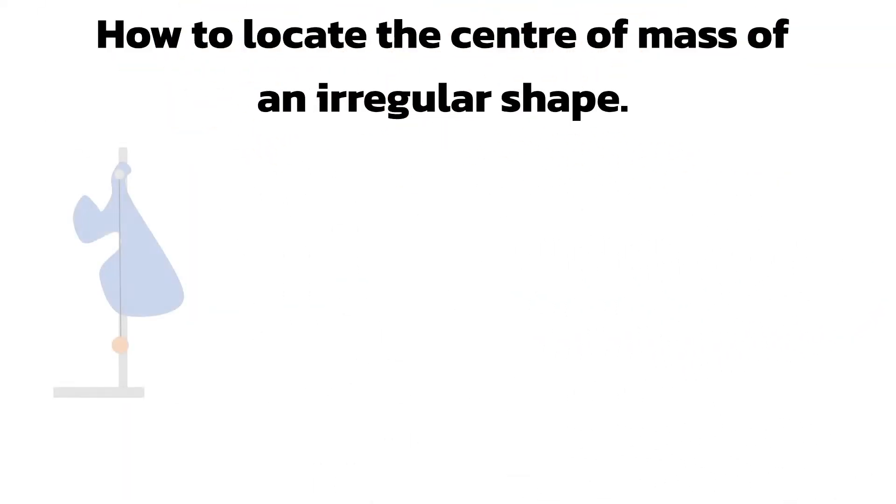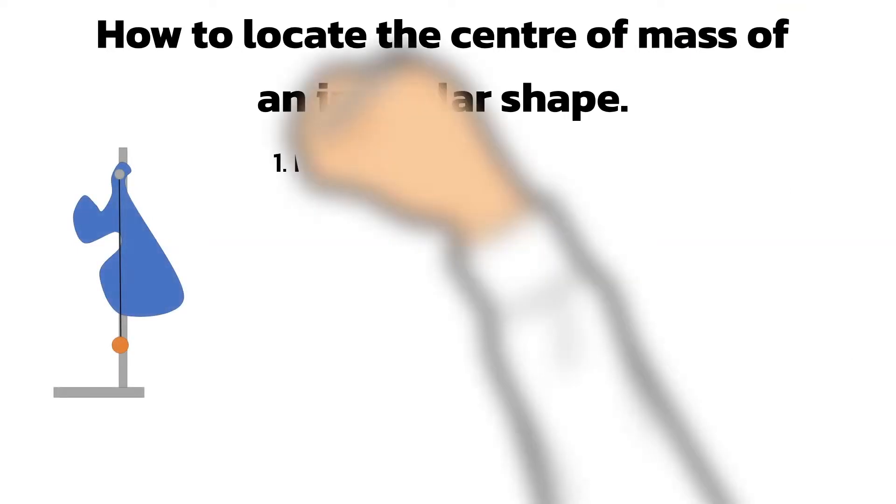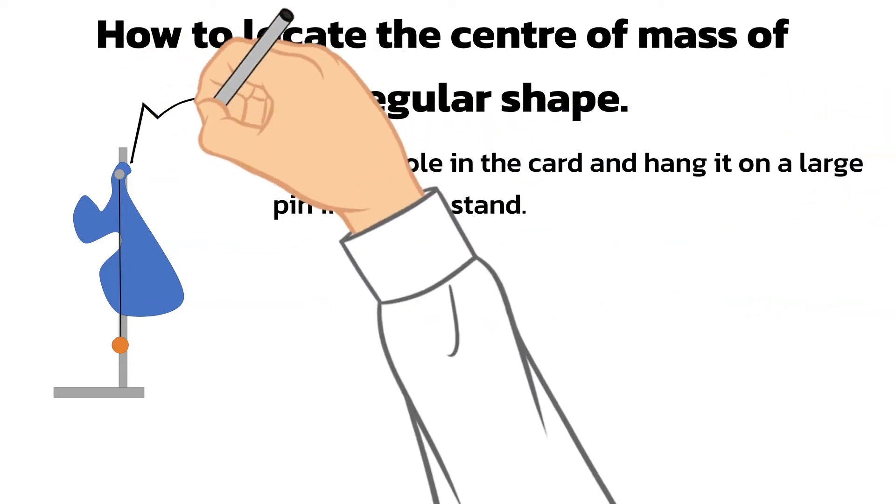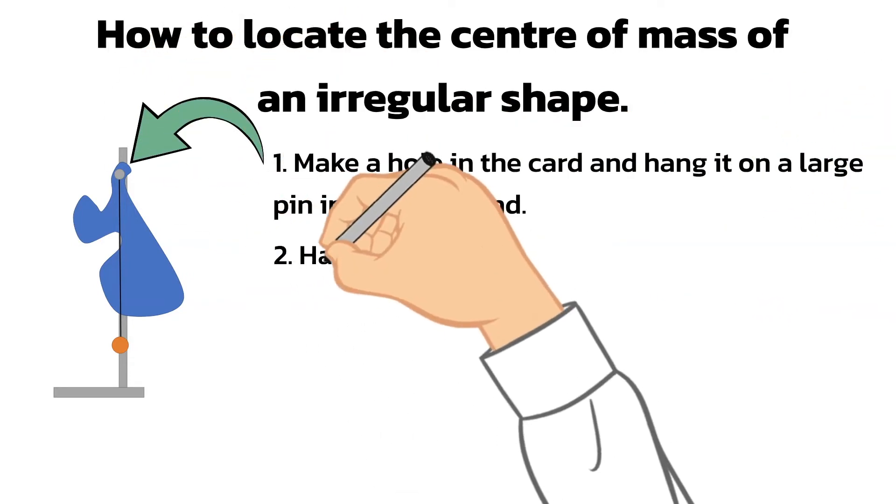If you have an irregular shape the process to find the center of mass is a bit different. First you need to make a hole near the edge of the shape and hang it on a large pin held in a retort stand. It's important that the shape is able to move freely on the pin.